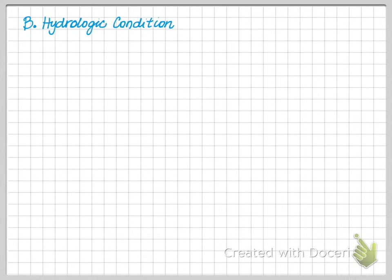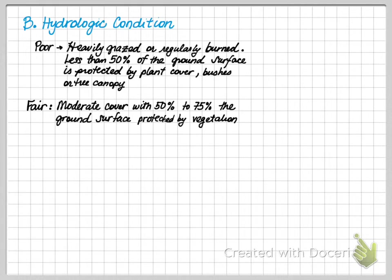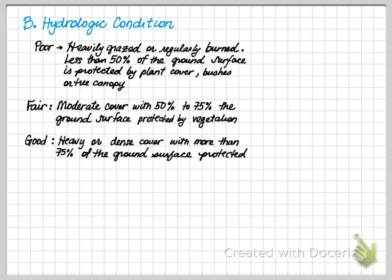Poor soil cover means the land is heavily grazed or regularly burned — like what we see in Southern California — where less than 50% of the ground surface is protected by plants, bushes, or tree canopy. Fair means moderate cover, with 50–75% of the surface protected. Good cover means heavy or dense cover with more than 75% covered. This is an important aspect in determining the curve number. If you're unsure of your hydrologic condition, it is recommended that you assume fair.